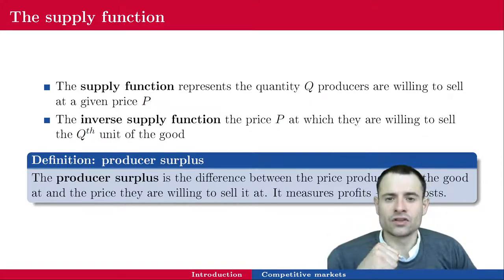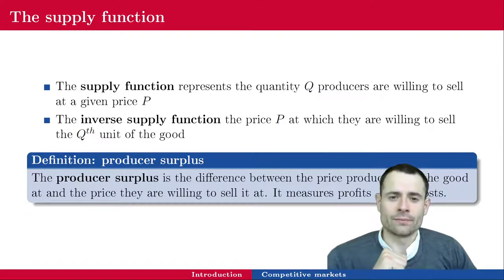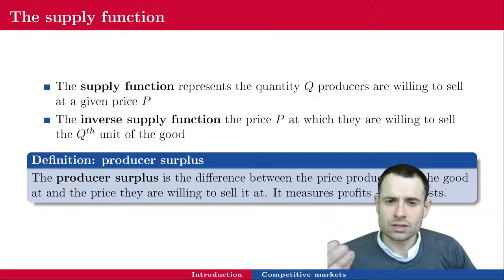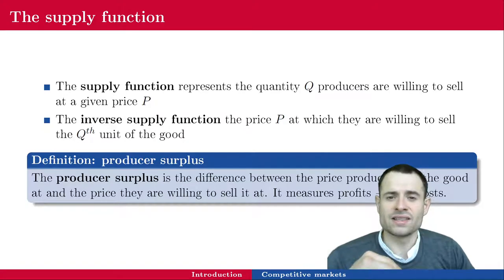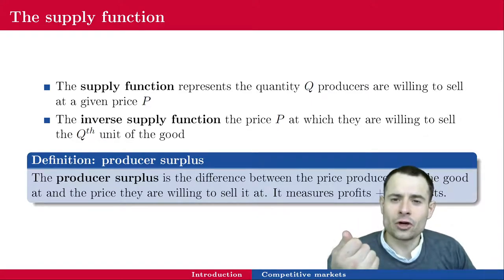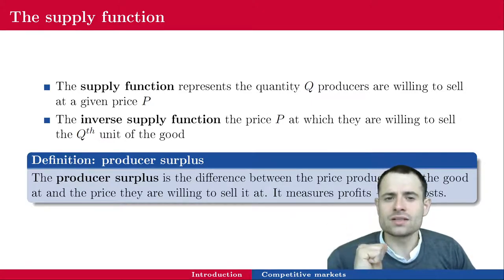The producer surplus is defined as the difference between the price producers sell the good at and the price they are willing to sell the good at. Remember that the supply function is a result of profit maximization. So if they are willing to sell a unit for $10, that is the price that maximizes their profit. The difference between the price they actually sell at and the price they were willing to sell at is the producer surplus. It actually measures profits plus fixed costs — so if a firm has no fixed costs, producer surplus and profits are exactly the same things.